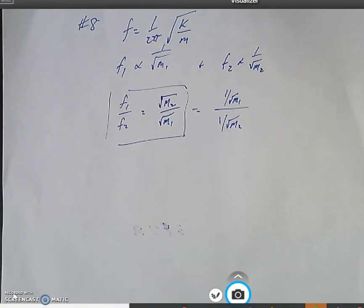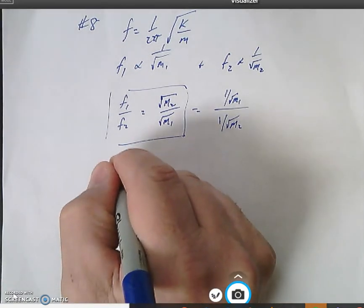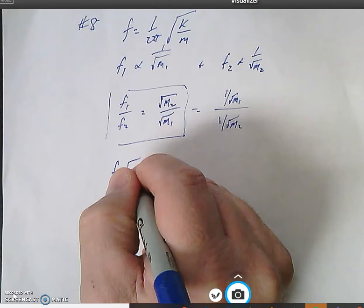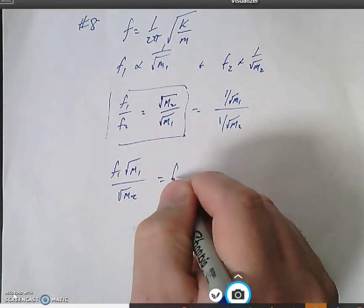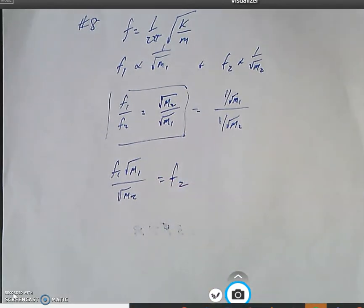frequency 2, let's just say. So if I take f1 and I cross multiply times the square root of m1 divided by the square root of m2, I'm going to get frequency 2.